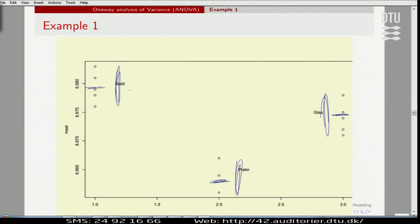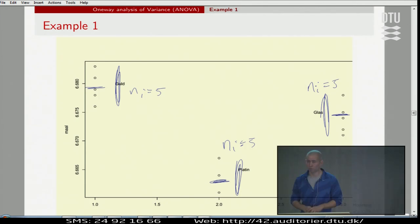And then of course we should remember that this variability is being diminished by a factor of five because we have five in each group. The more we have in each group, the easier it becomes to actually prove that groups are different.